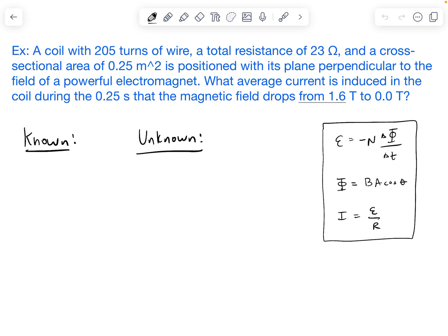We have a coil here with 205 turns of wire, a total resistance of 23 ohms, and a cross-sectional area of 0.25 meters squared, and it's positioned with its plane perpendicular to the field of a powerful electromagnet. What average current is induced in the coil during the 0.25 seconds that the magnetic field drops from 1.6 teslas to 0 teslas.